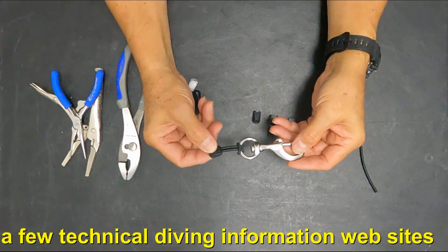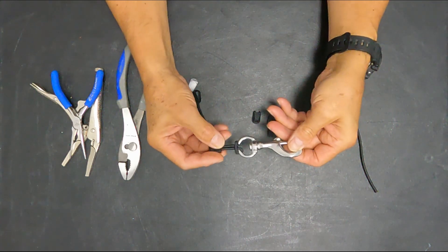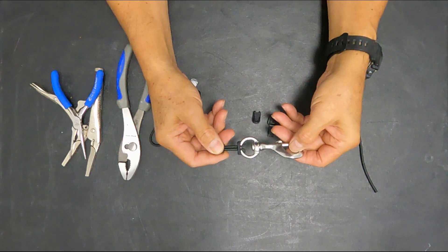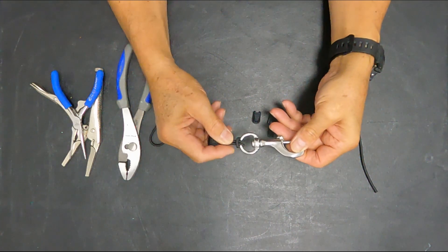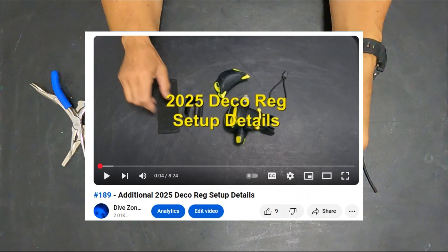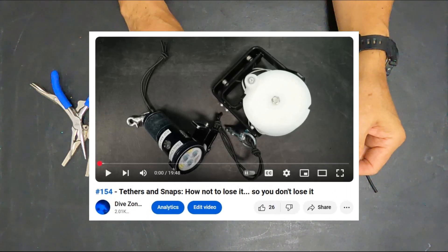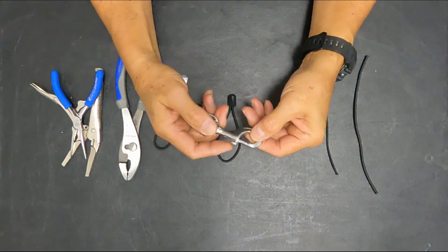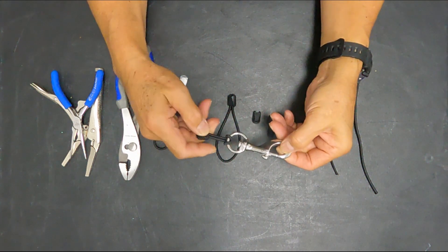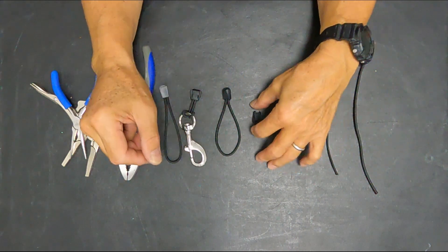One of the most common applications for a bungee retainer of this type is for securing your long hose when you're not using it, when it's not in your mouth. You should always have it clipped off to a D-ring. And then I also use this to hold my redundant bladder inflator so that I have ready access to it. We have seen in a couple of the recent videos that bungee can also be used for securing your decompression regulator second stage and there are many others, securing different accessories, all those kinds of different things.